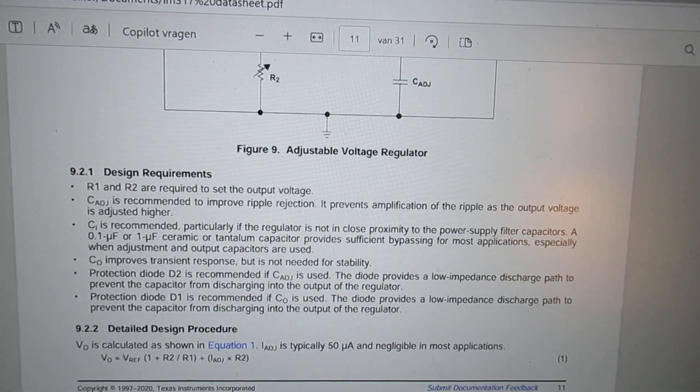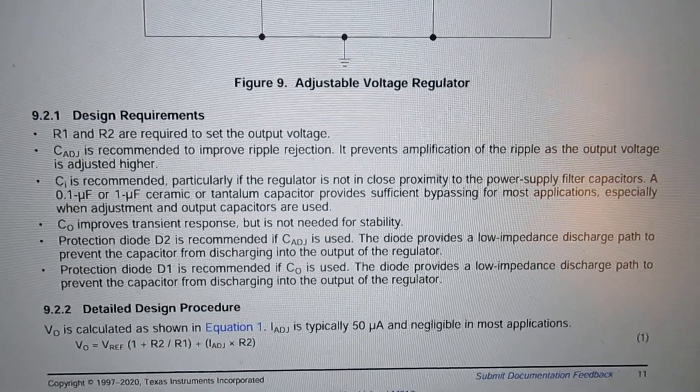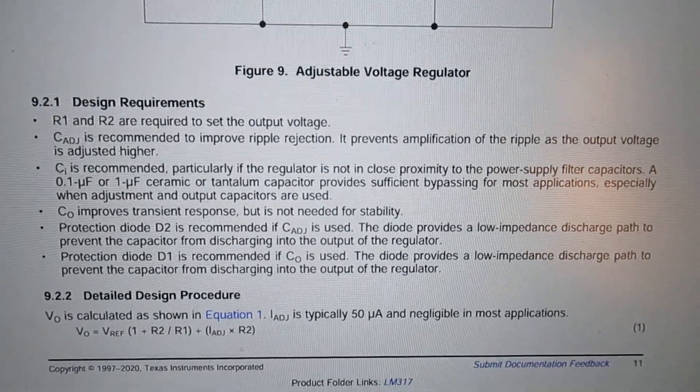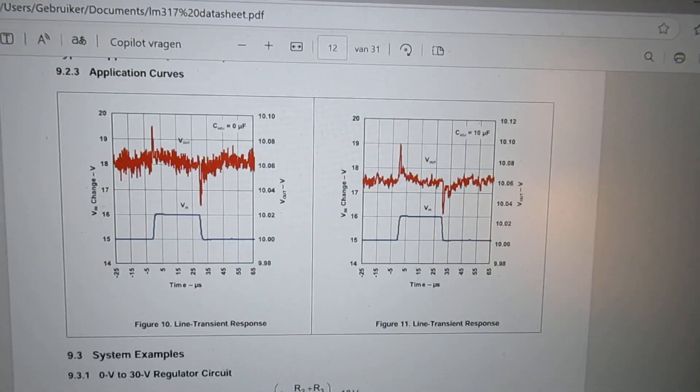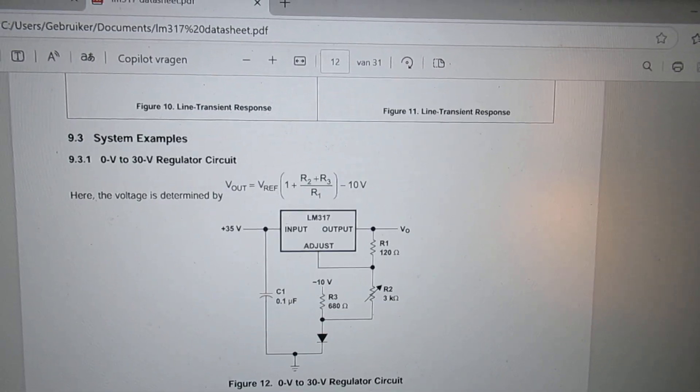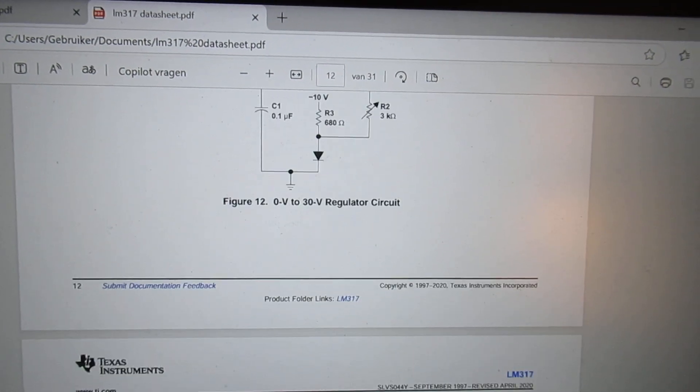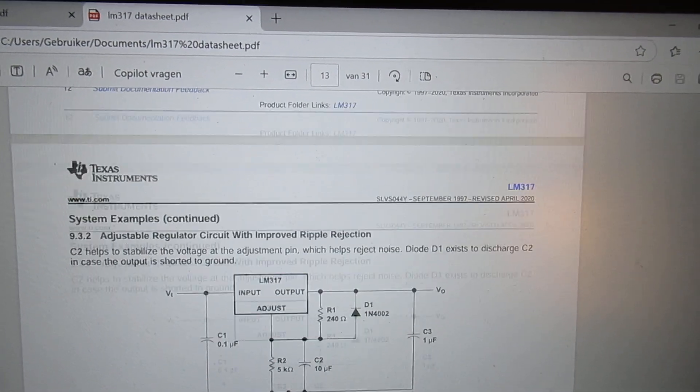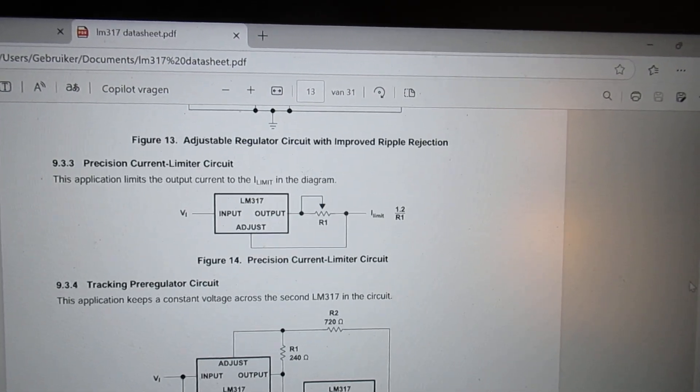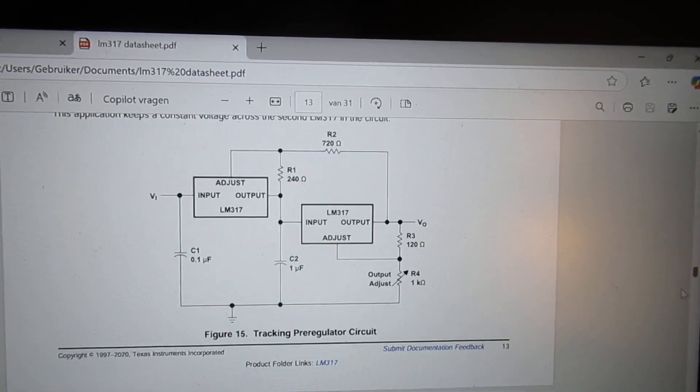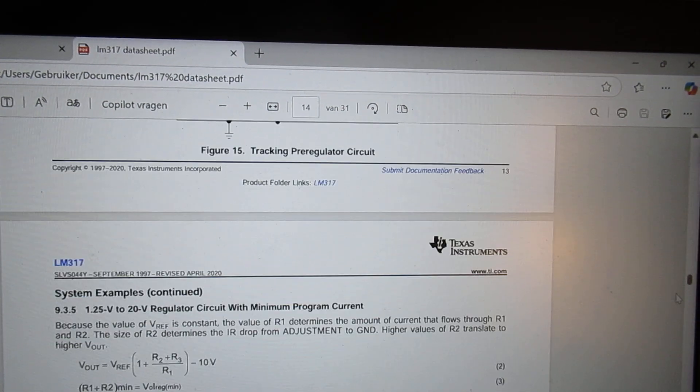So anyway, let's go again here. Take that all in account. Here info about ripple rejection. The ripple rejection changes when the output voltage goes up. That's in a certain way logical.